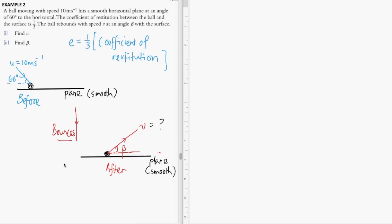The ball moves at speed v after collision, which we need to find out, along with the angle at which it will rebound from the surface. Before we do that, we are going to label the y and x components.